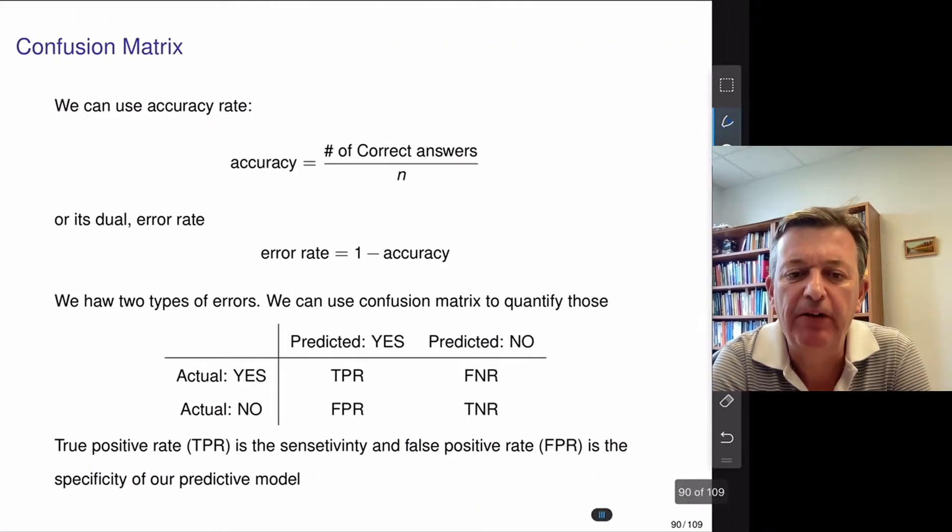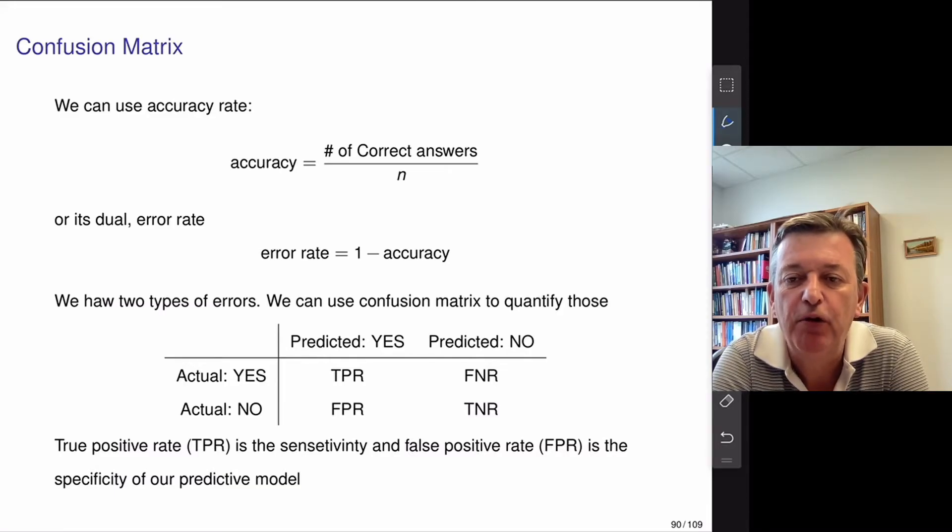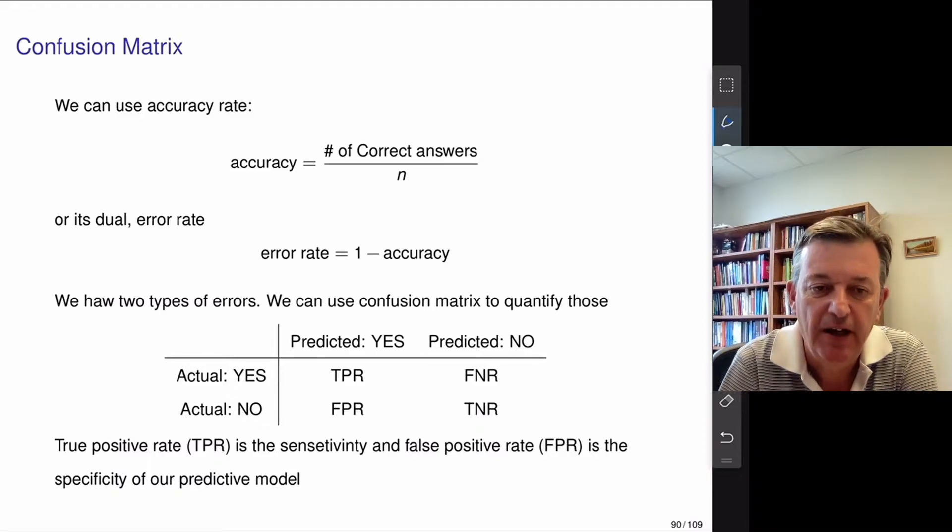I think we've talked about this before. So back when we did sensitivity specificity, in these classification problems, you'll typically plot this confusion matrix. Basically, what's the percentage of correct answers to sample size, your true positive rate and false positive rates.